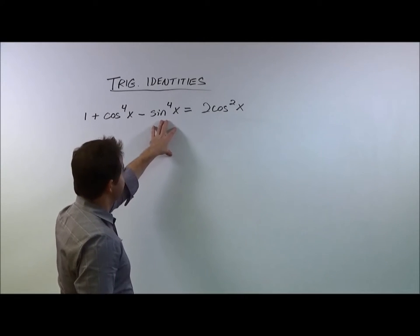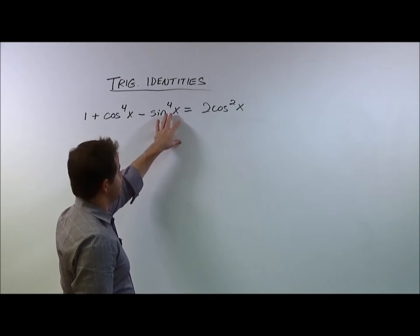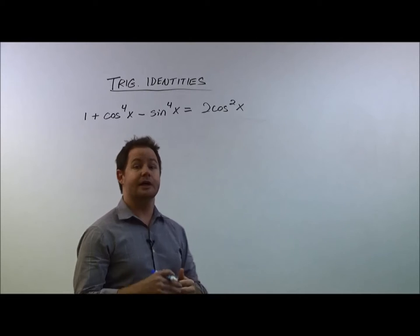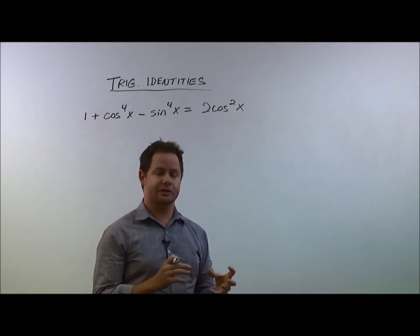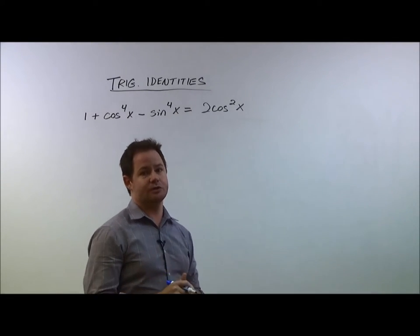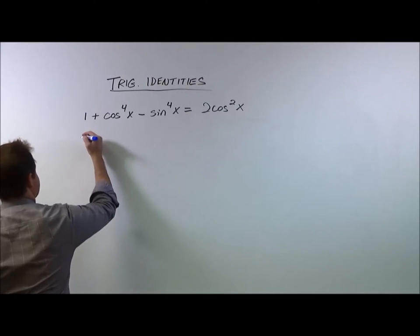So here I want to substitute in, in place of sine to the fourth of x, sine squared times sine squared so that I can start to introduce some identities. So let's take a look at that first step.